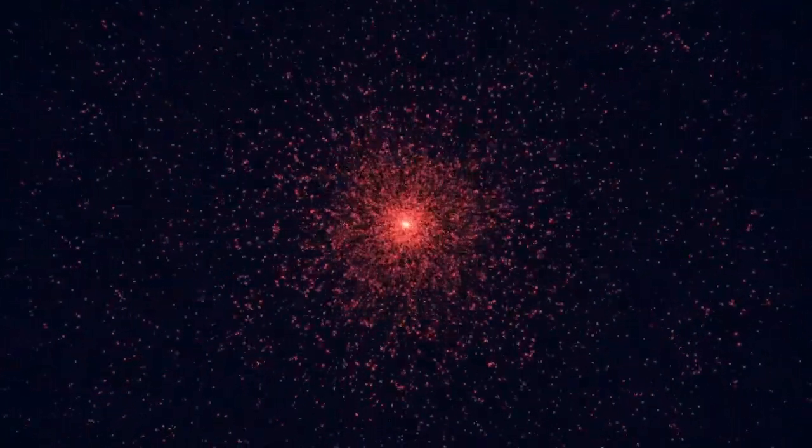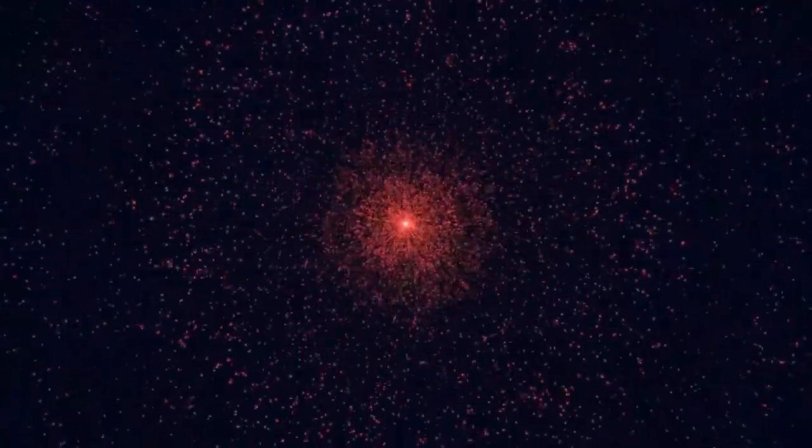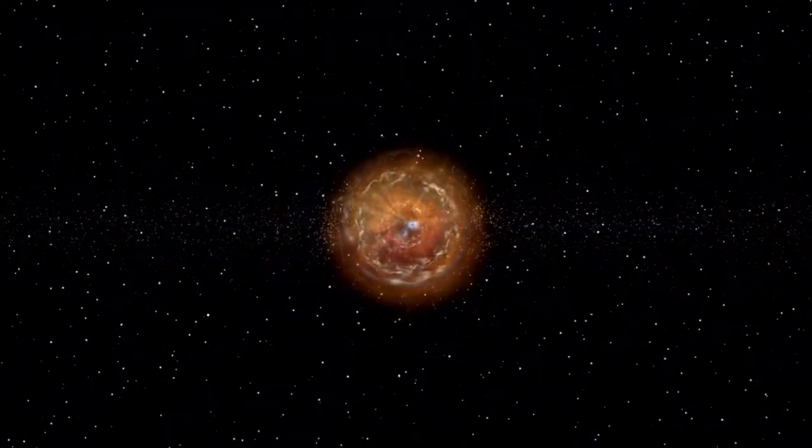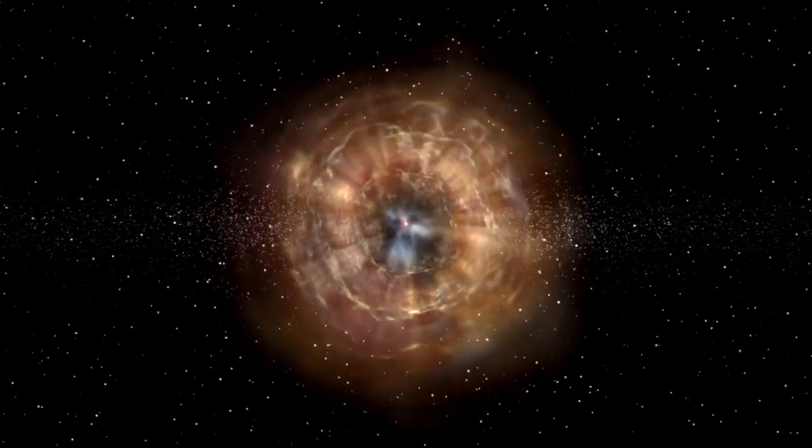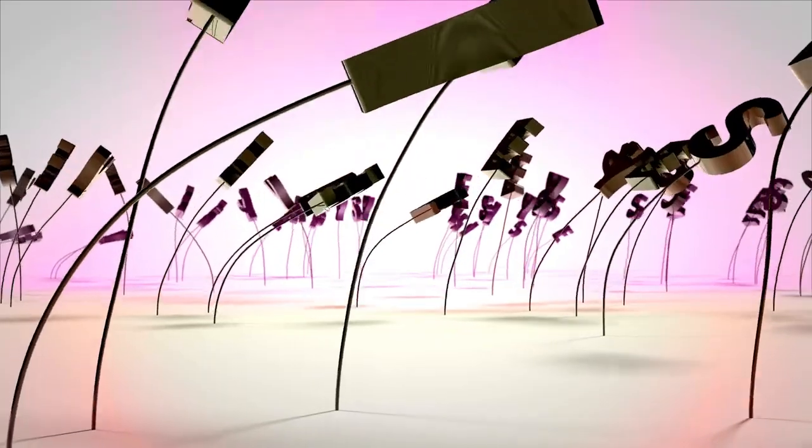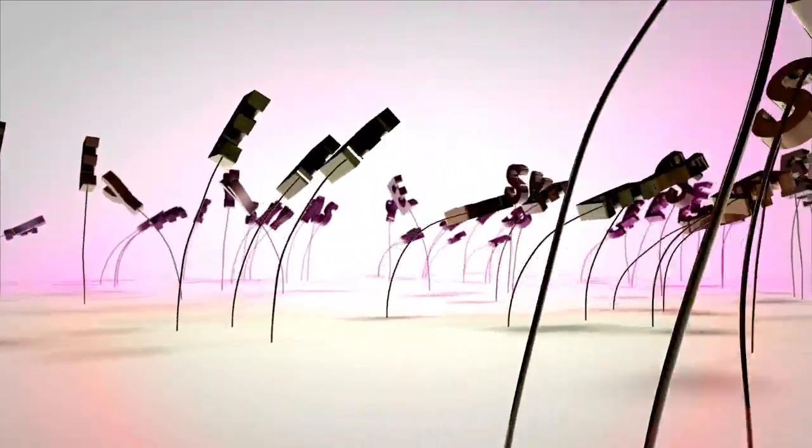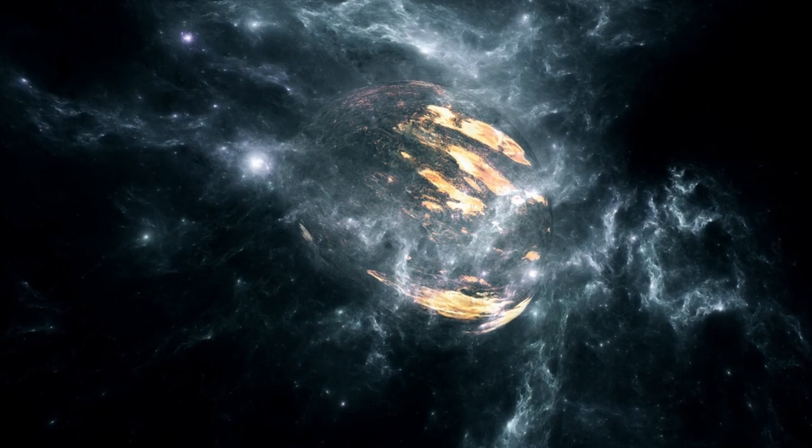Betelgeuse is no ordinary star—it is a red supergiant of immense proportions, vastly larger than our sun. Despite being located over 640 light years from Earth, it appears prominently in our night sky. This impressive brightness is deceptive, as that distance means it would take more than six centuries for light to reach it.